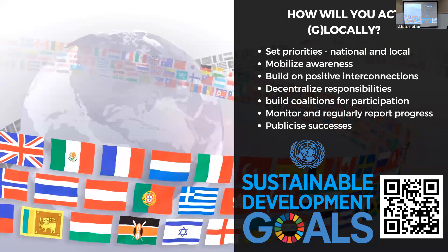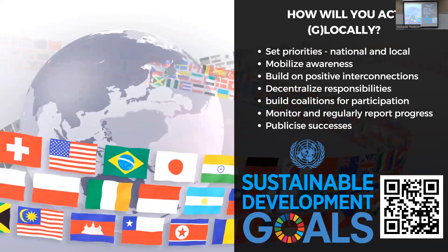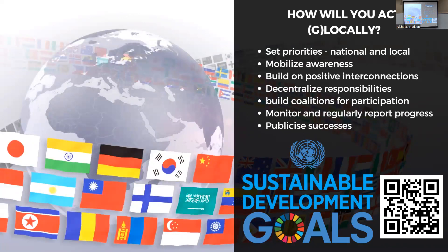How can we act locally? We can set priorities at a national and local level. The United Nations adopted the SDGs but aren't telling countries how to implement them — our responsibility as citizens is to ask our countries to do more, to continue developing programs. We also need to mobilize awareness. What we're doing right now — teaching you all and helping you understand what these goals are and how you can be part of them — is key. You could include any effort your organizations do, for example putting an SDG icon on flyers, like a sorority's breast cancer awareness event aligning with SDG Five for gender equality — raising awareness and making people curious.